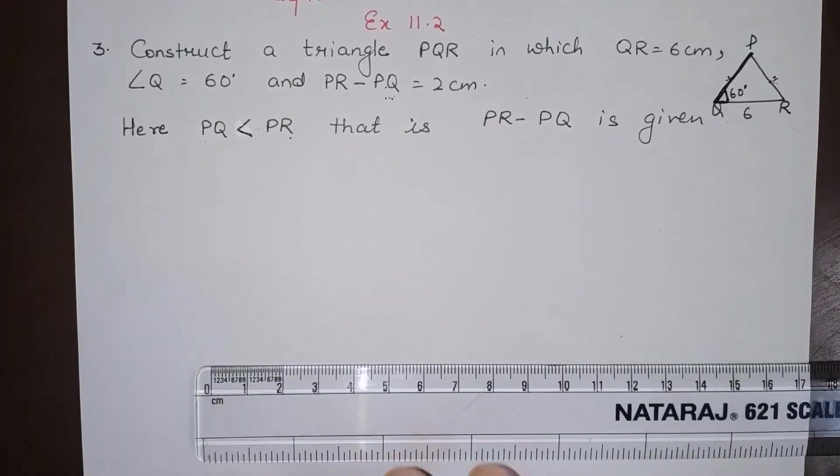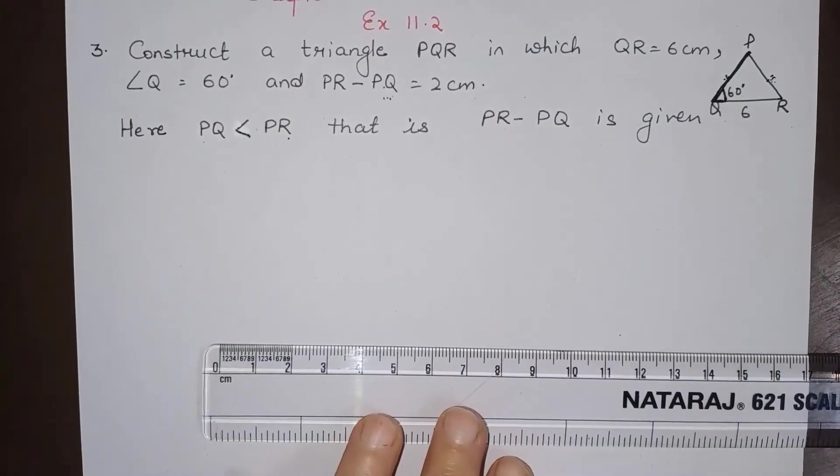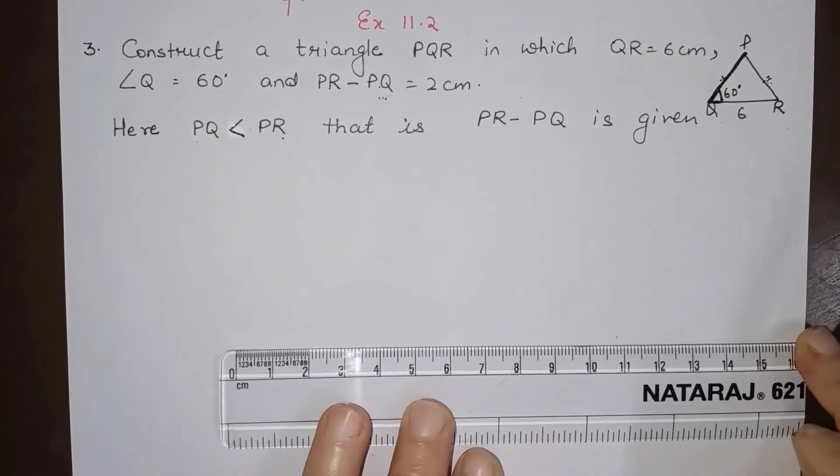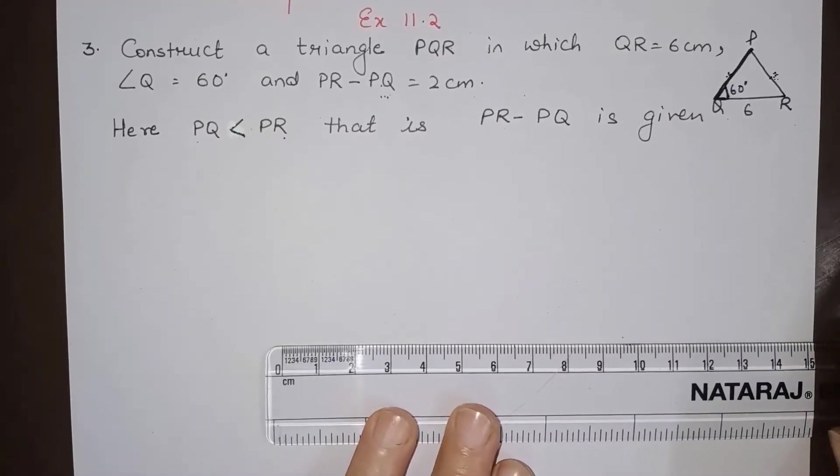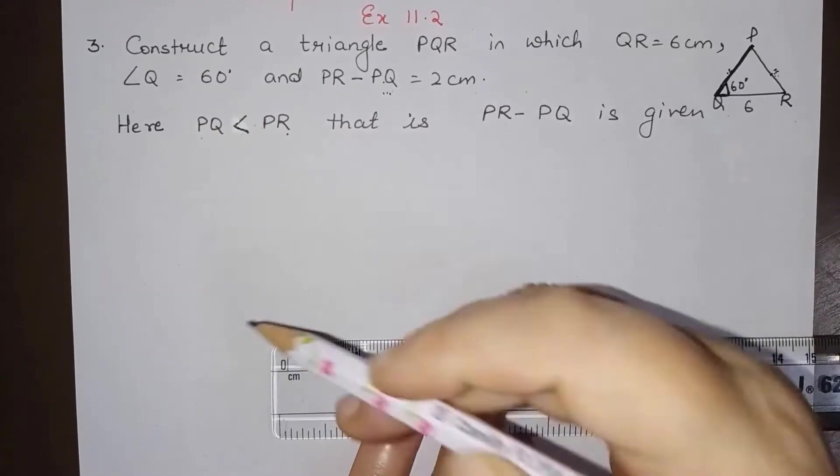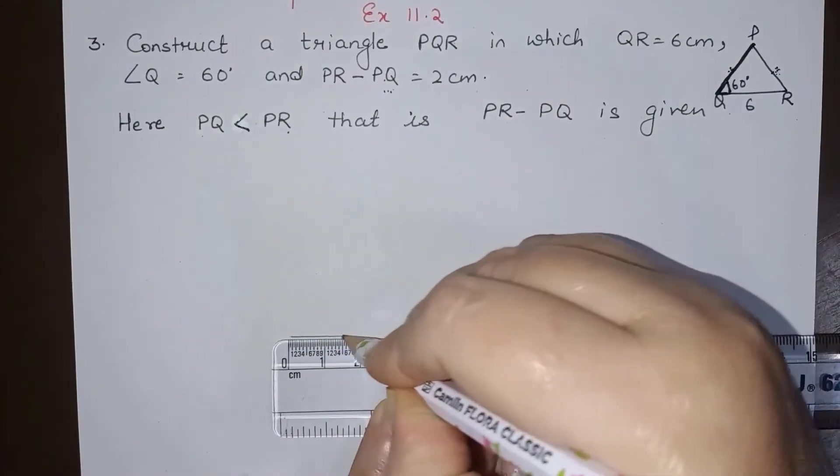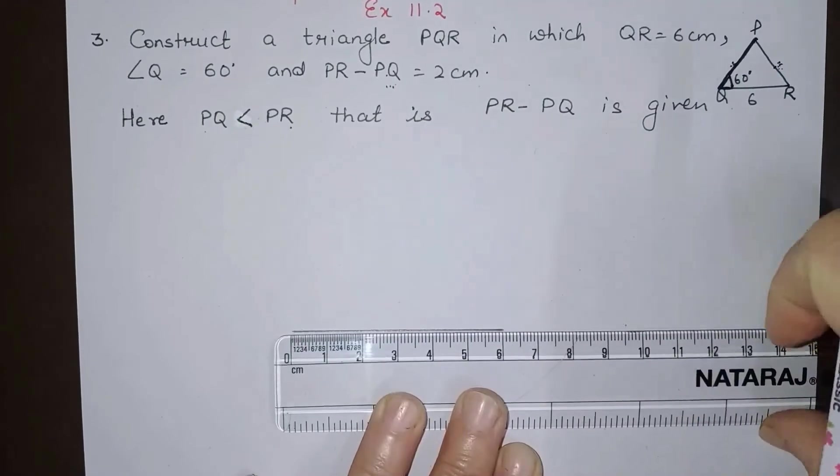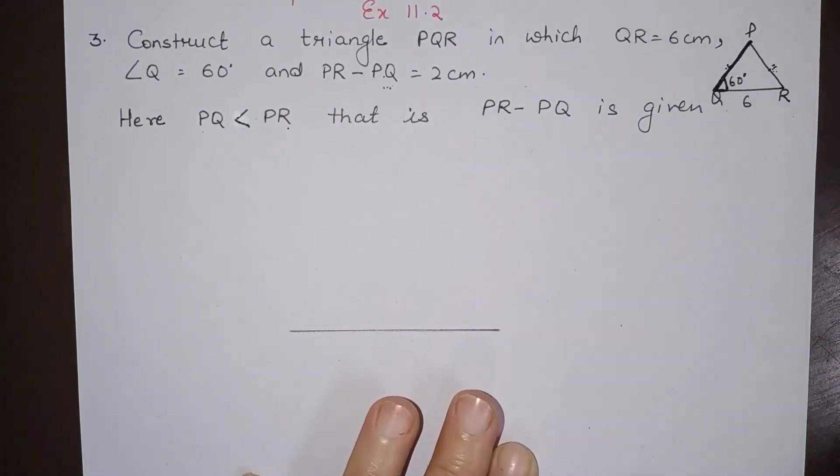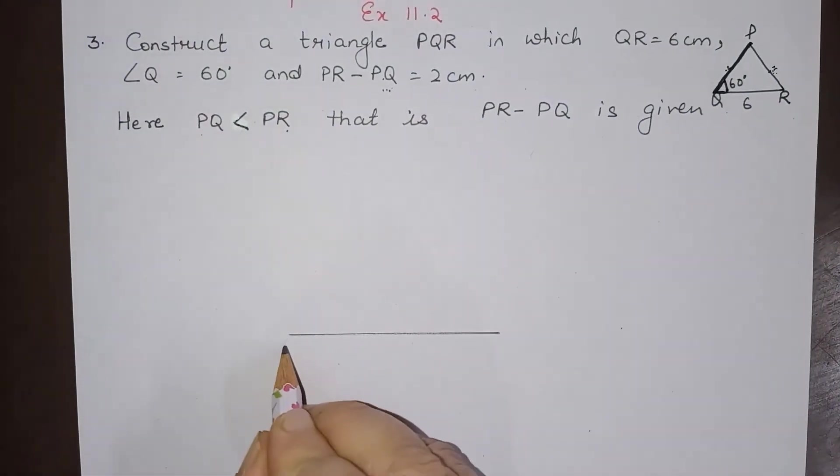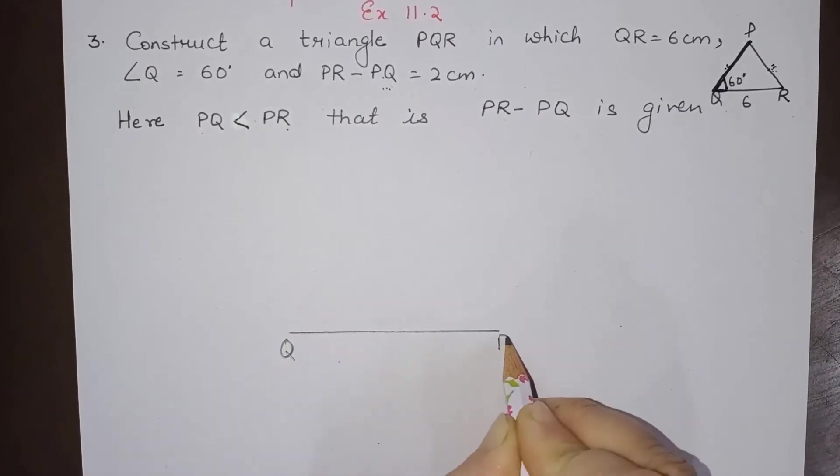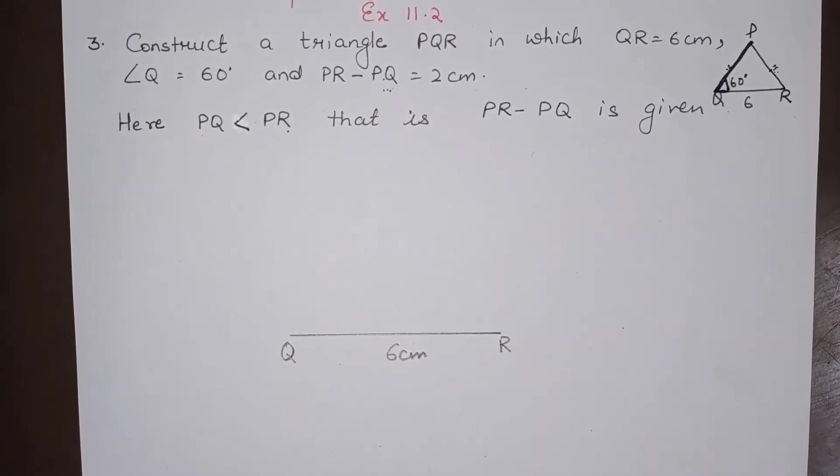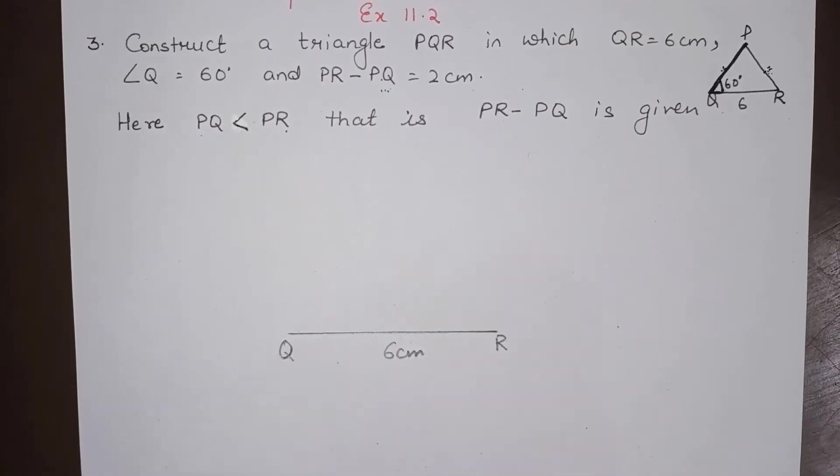We have to first draw base and base angle. So base is QR which is 6 centimeter. We will draw this QR to be 6 centimeter.